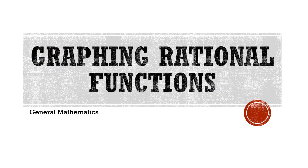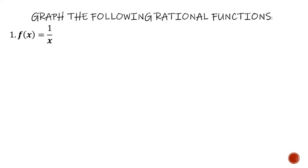Hello there. Congratulations for making it this far. We are now in graphing rational functions. We already know how to get the asymptotes and the intercepts of a rational function. The next step is for us to make the table of values, plot the points, and sketch the graph. So your job now is very easy.